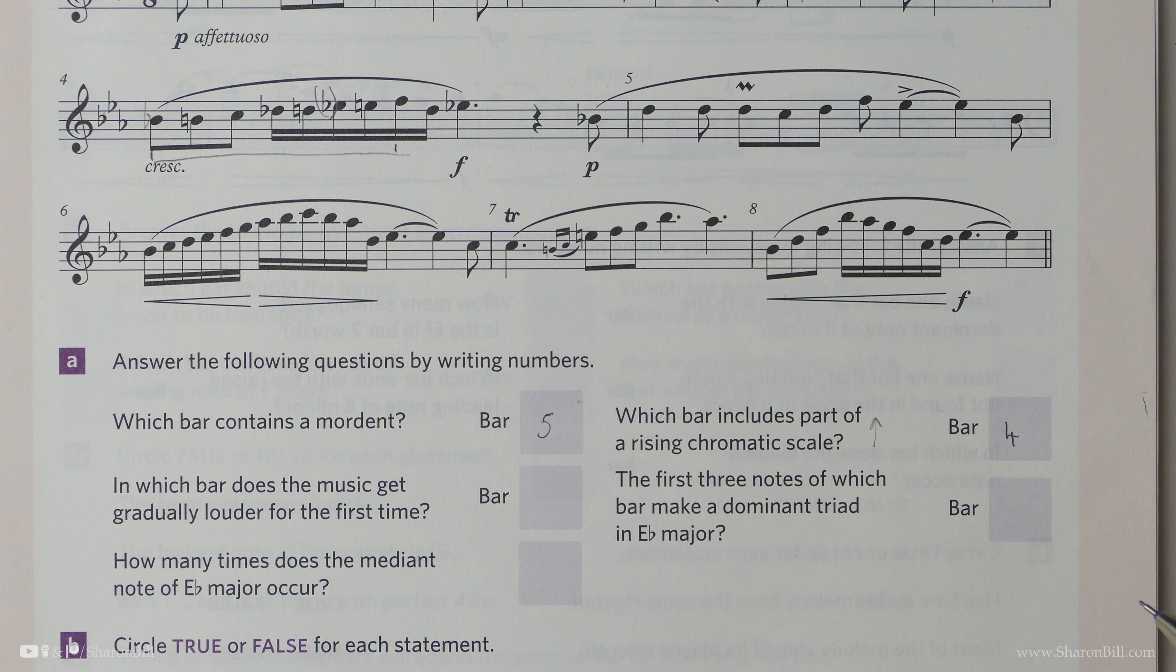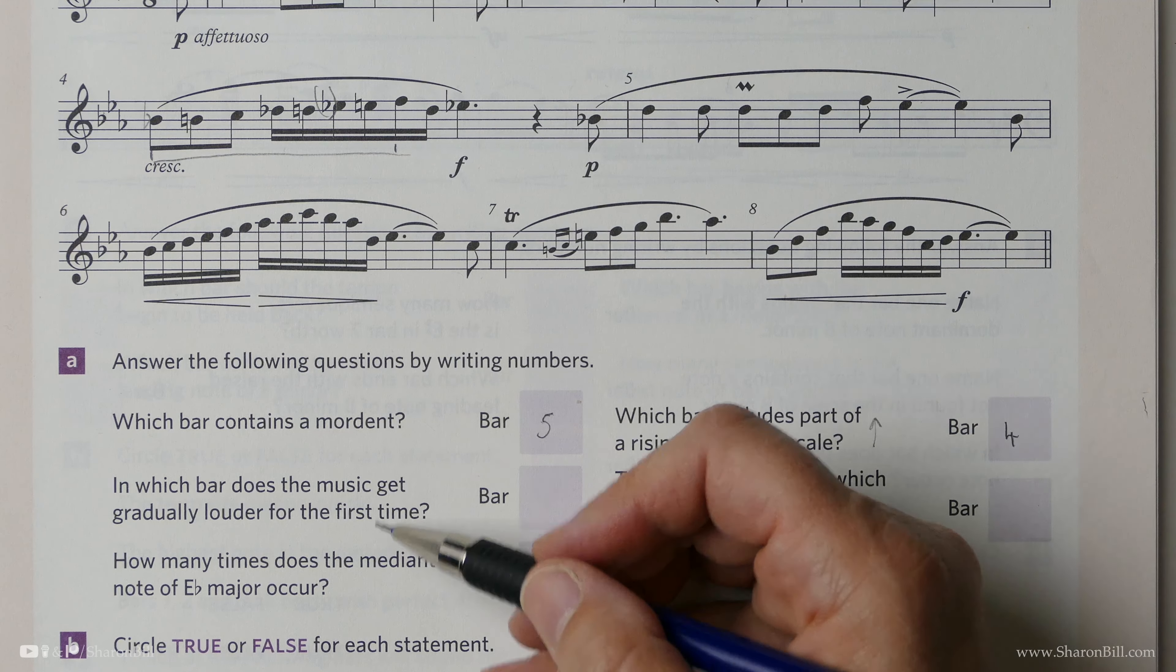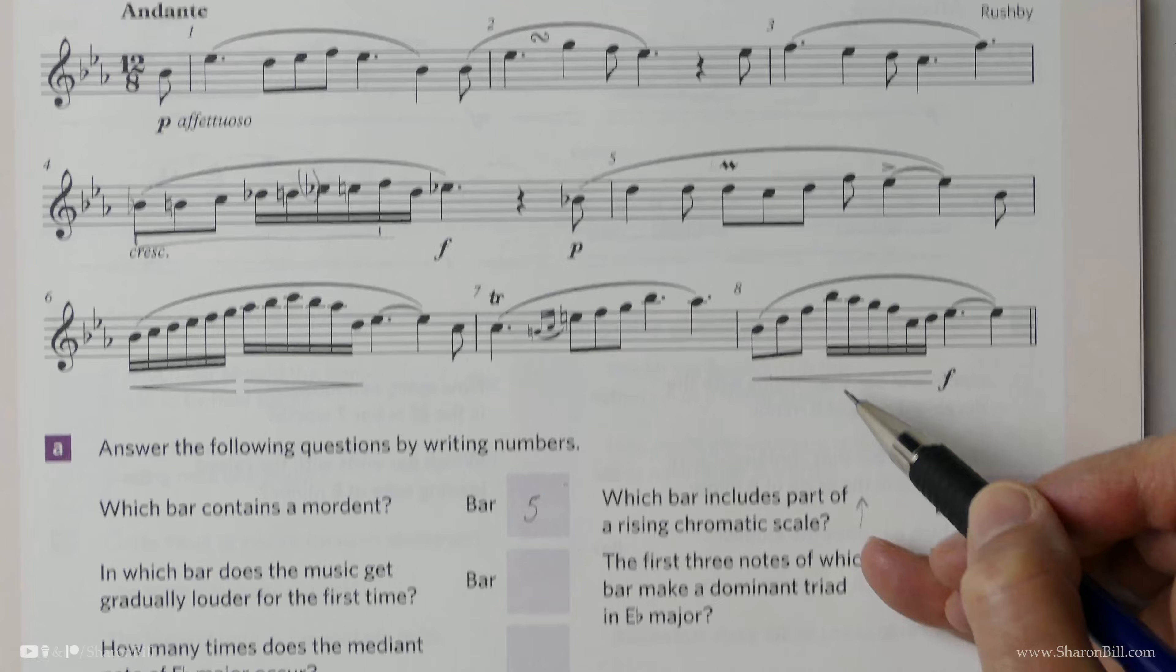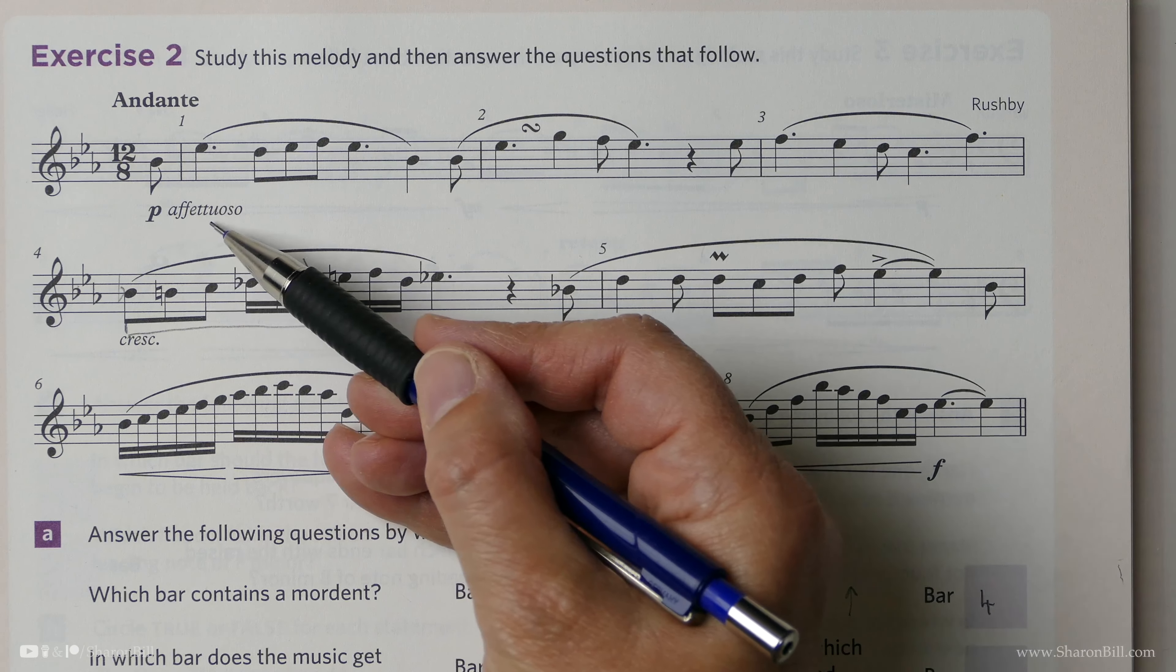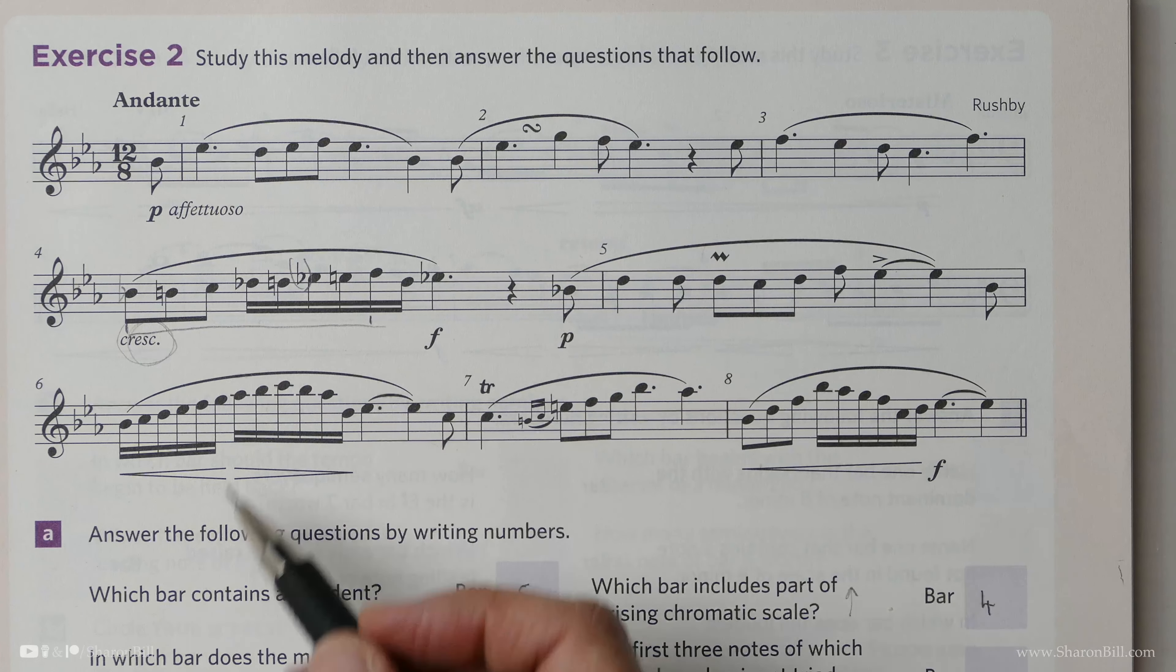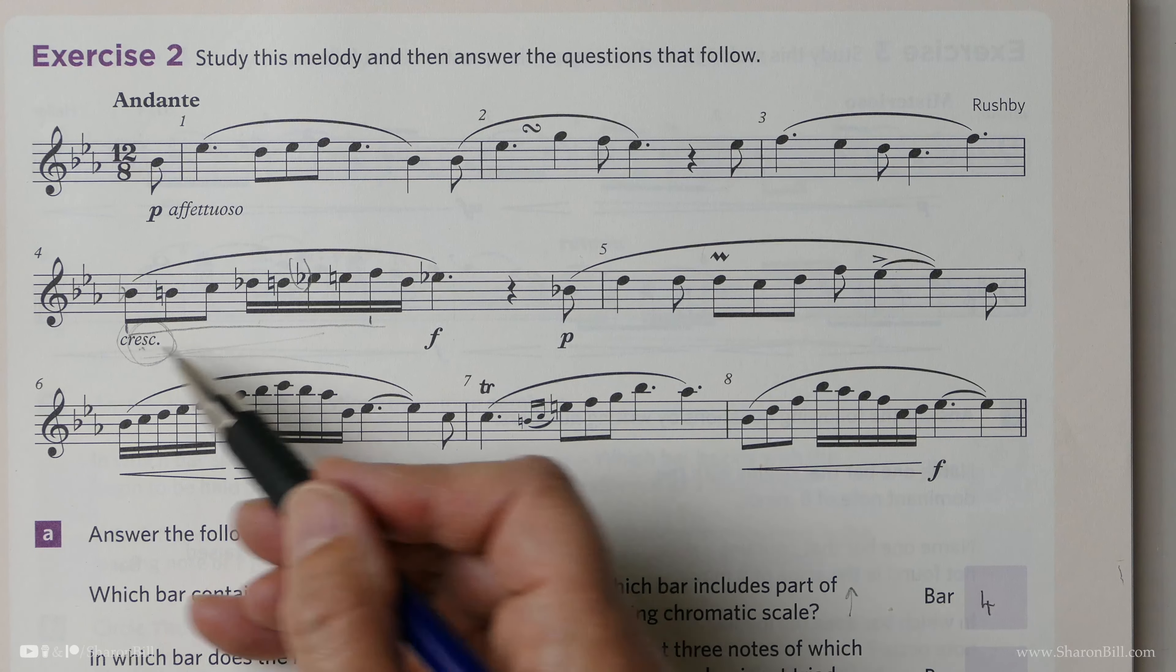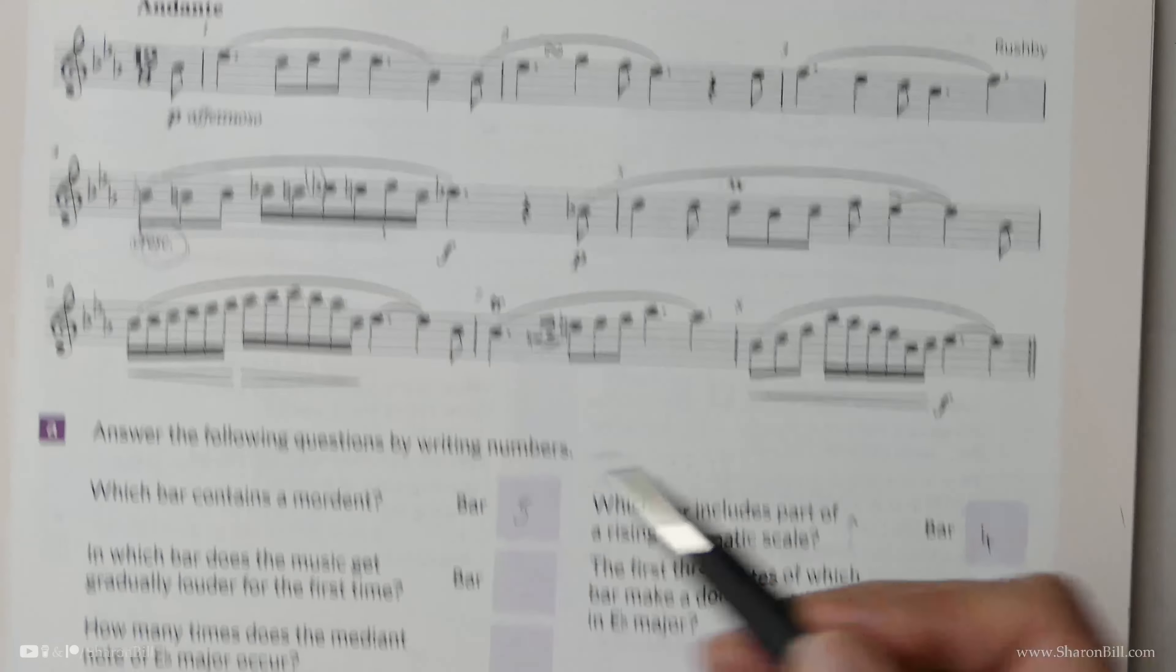Now then, in which bar does the music get gradually louder for the first time? So we can see there are lots of little dynamic markings here. We've got crescendos here and here. But where does it get louder for the first time? Now we start off quietly and tenderly. And here, this is where it starts to get louder. Crescendo is another way of showing that sign. We've just got it in word form rather than diagram form. So actually that's bar four also.